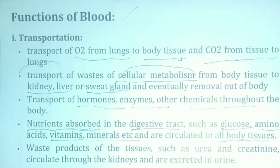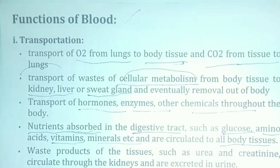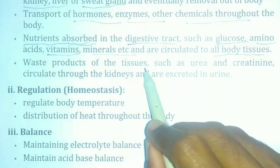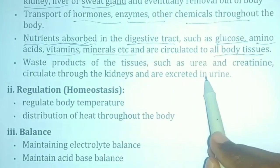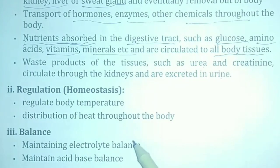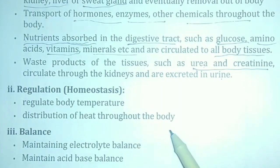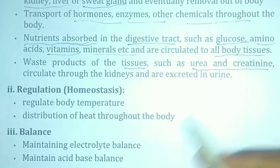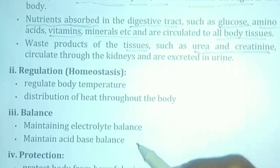Blood carries waste products of tissues, such as urea and creatinine, which circulate through the kidney and are excreted in the urine.